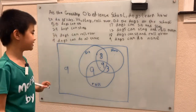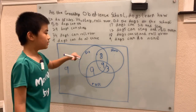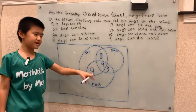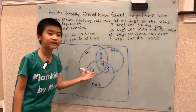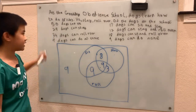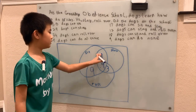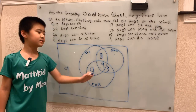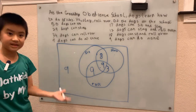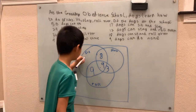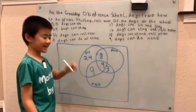Now for the big single-category parts, which is actually easy. For sit, the values 8, 9, and 9 are already inside the sit region, so we subtract their sum from the total 50. That's 9 plus 9 is 18, plus 8 is 26. So 50 minus 26 is 24 — there are 24 dogs that can only sit.